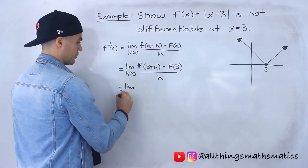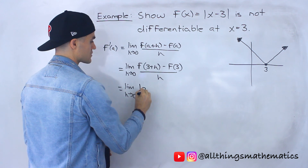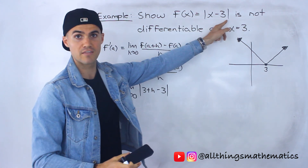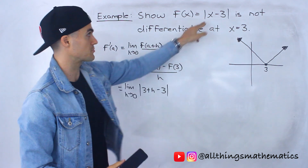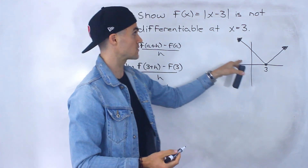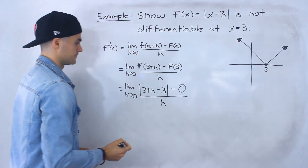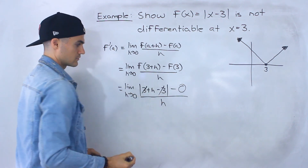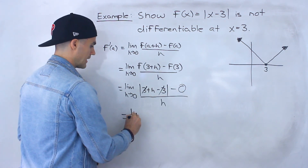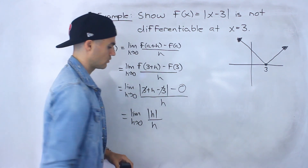If we plug in 3 plus h for x, what we'll have is the absolute value of 3 plus h minus 3, minus f of 3. We know f of 3 is 0, so that term is 0, all over h. Inside the absolute value, those 3's net out to 0, so we're left with the limit as h approaches 0 of the absolute value of h, all over h.